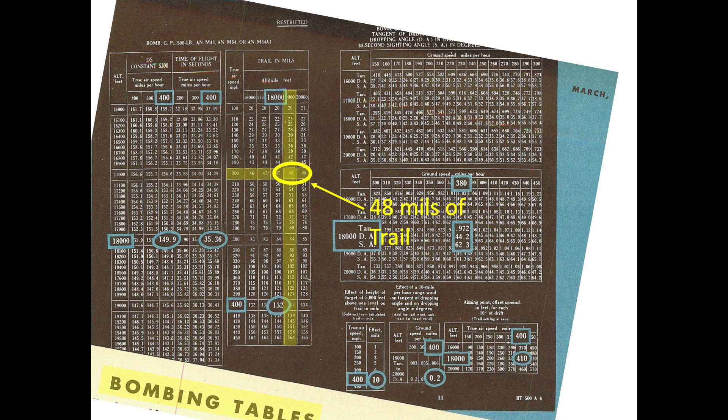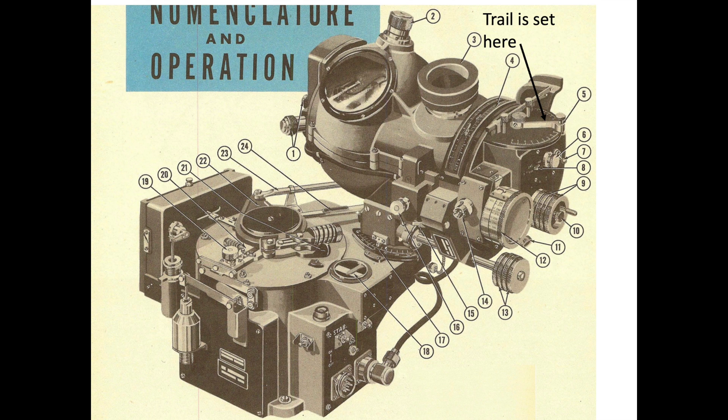The bombing trail equates to 48 mils. We will need to convert this value to length by 48 mils times 19,000 foot bombing altitude divided by 1,000, or 912 feet. The trail is set here in the Norton bomb site.